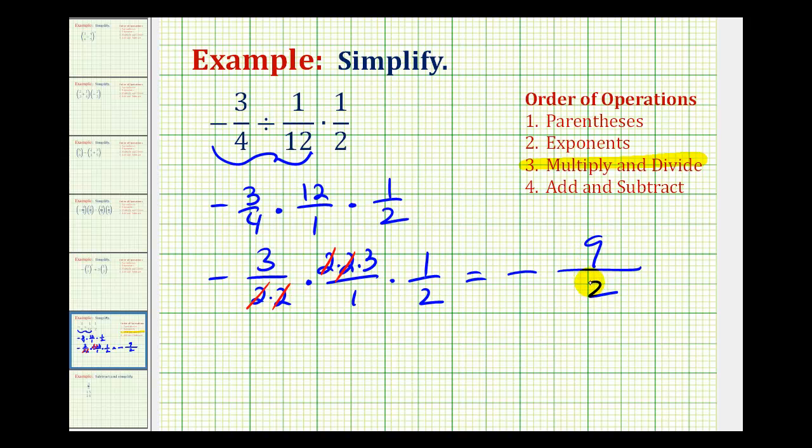So this is in simplest form, but it's also an improper fraction. So let's go ahead and write this as a mixed number as well. We know it's going to be a negative mixed number. And then we'll divide nine by two.